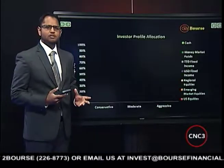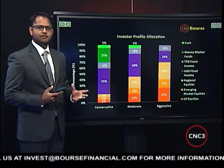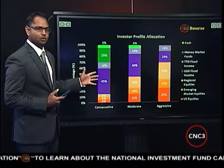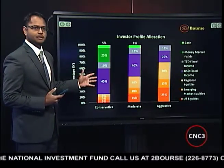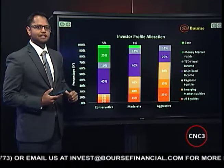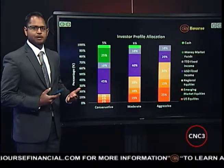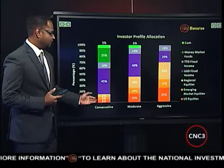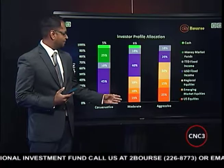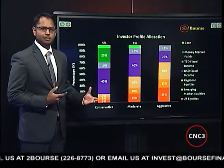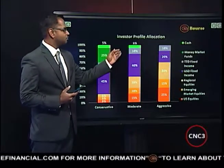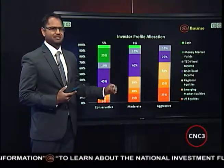What would these portfolios look like in terms of composition and allocation to different asset classes? For the conservative investor, just around 55% would be allocated to fixed income instruments, about 30% allocated to cash and money market instruments such as money market funds, repurchase agreements, et cetera, and just around 15% to equities. For the moderate investor, just around 45% would be allocated to equities — be it regional or international — around 50% to fixed income, and a much smaller component to money market instruments, just around 5% to cash.